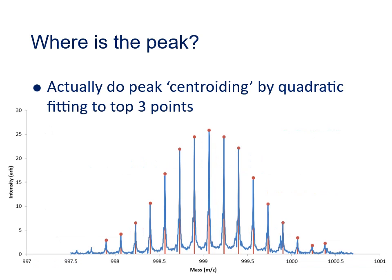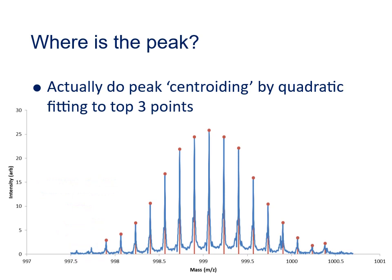I certainly never use centroided spectra unless I've also had a look at the profile spectrum as well. If I superimpose the centroided spectrum over the profile spectrum, we can see what's missing. Not all of the peaks are actually in the centroided spectrum. There are some that are quite clearly visible in the profile spectrum that are missing from the centroided spectrum. So why are these two peaks not included in the centroided spectrum? Quite simply, these two peaks were below a threshold that was set to determine which peaks should be included.